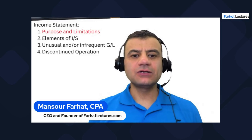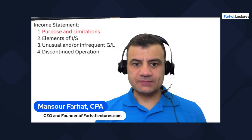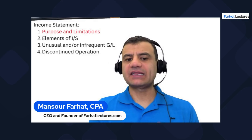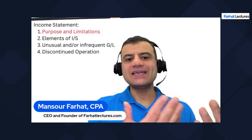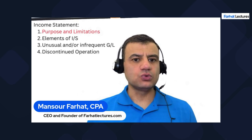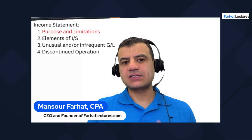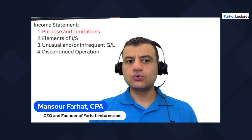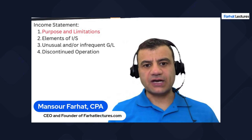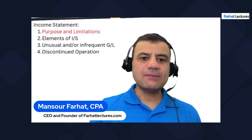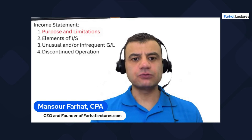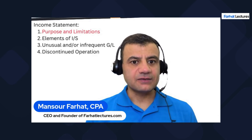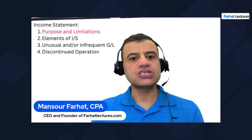Hello everyone, and welcome to this session in which we look at a series of recordings that deal with the income statement. In the first recording, we would look at the purpose and limitations. We'll also look at the elements of the income statement, unusual and infrequent gains and losses, and discontinued operations. As an accounting student, CPA candidate, or CMA candidate, you want to be very comfortable and competent about financial statements — what goes on them, what's the purpose, and how they are presented.